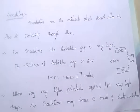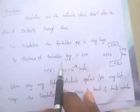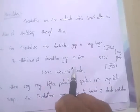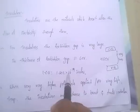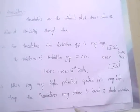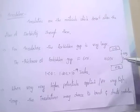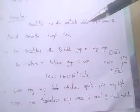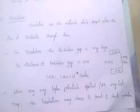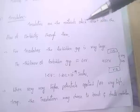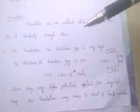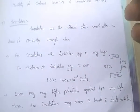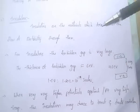The energy gap is nearly 6 electron volts, where 1 electron volt equals 1.602 × 10⁻¹⁹ joules. Whenever we apply very high voltage or at very high temperatures, the insulation may break and conduction may start.